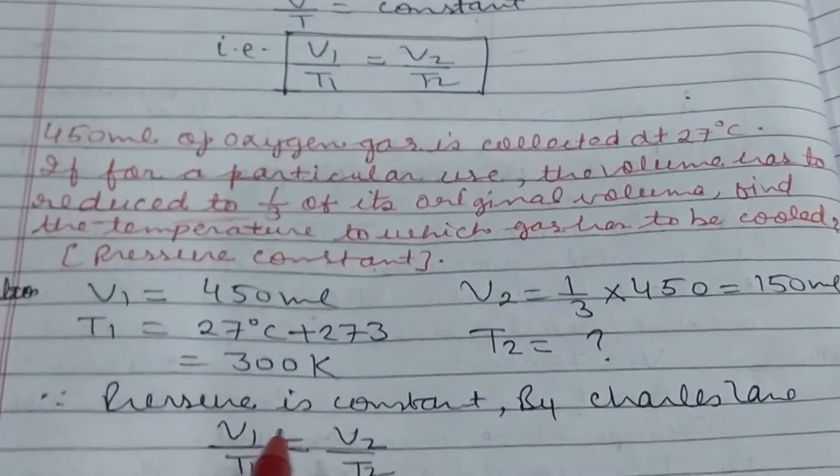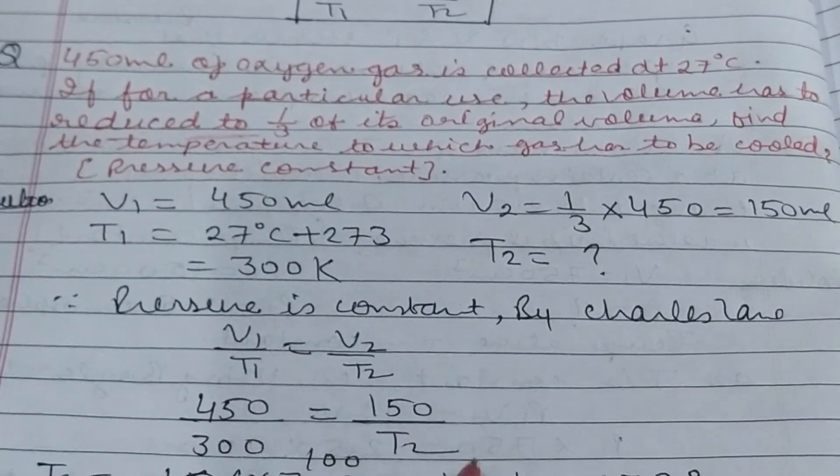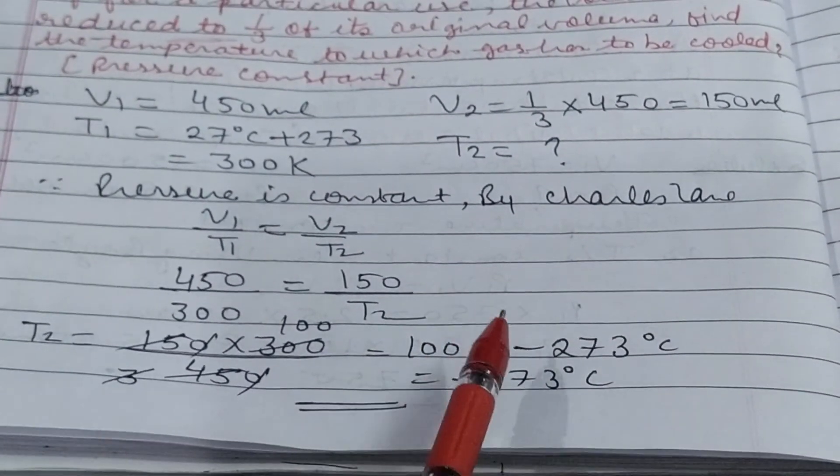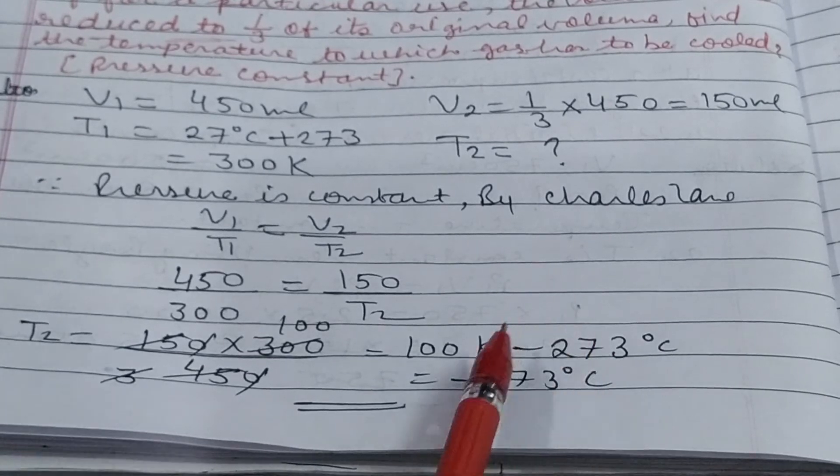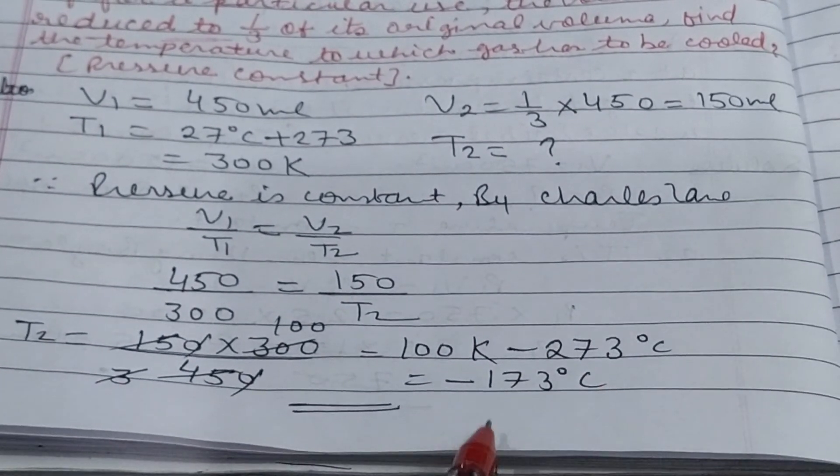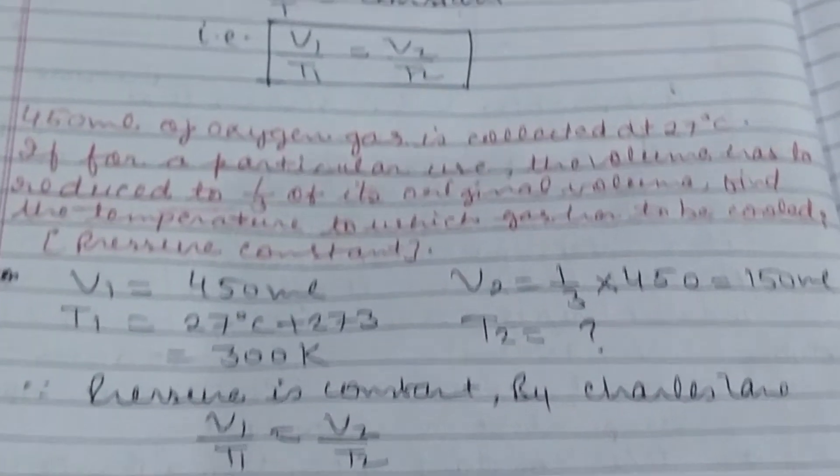You have to calculate temperature to which gas has to be cooled at constant pressure. Simply apply Charles' law because pressure is constant. V1 upon T1 equals V2 upon T2. Put these values and you get 100 Kelvin. Also write the answer in Celsius by subtracting 273 from Kelvin temperature. Such numerical problems you can do very easily.